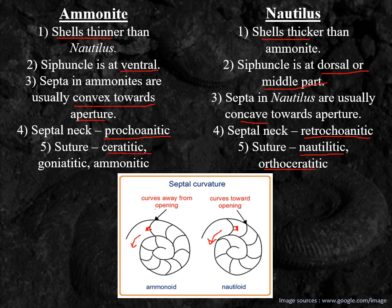These parameters allow us to easily distinguish a nautiloid shell from an ammonite shell even in the fossil record, since all these features are observable in fossils. That's all for today's class.